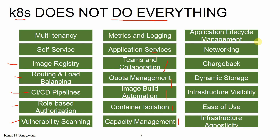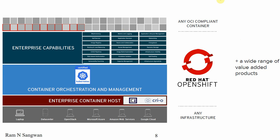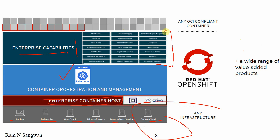Dynamic storage, chargeback, networking, and ease of use are also lacking. A perfect analogy: an engine gives you the power, and the car gives you the presentability and manageability — making effective use of that engine. So here comes OpenShift. OpenShift is an enterprise container host. You can host it on your laptop, data center, OpenStack, Microsoft Azure, Amazon Web Services, or Google Cloud — any infrastructure. The core is Kubernetes, and the enterprise capabilities are provided by OpenShift on top of Kubernetes.